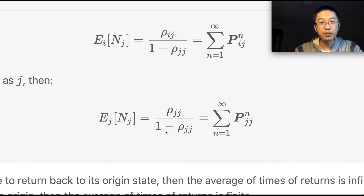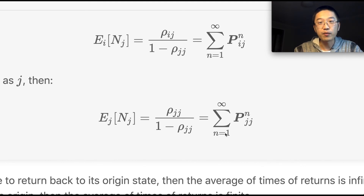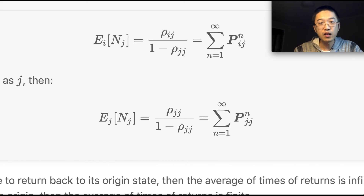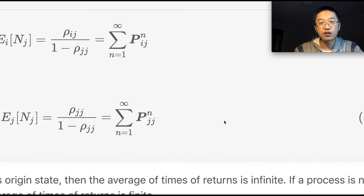If we let i equal j, then E[N_j] = ρ_jj / (1 − ρ_jj), which also equals Σ_n (P^n)_{jj}. We label this Equation 3.